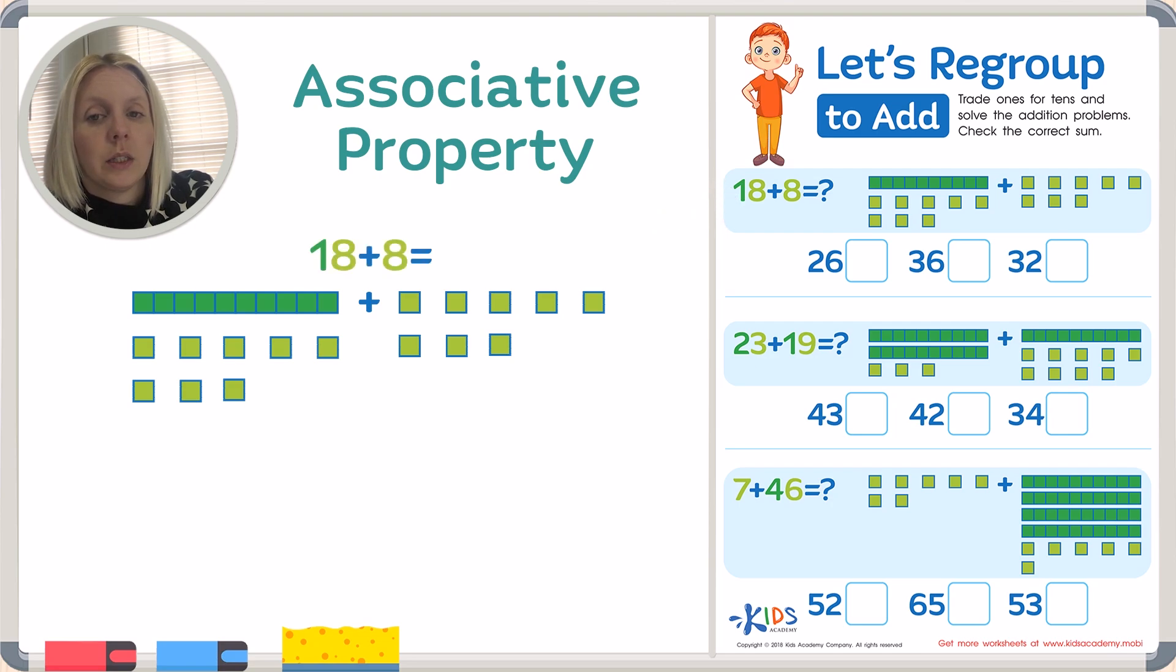So this is 18 plus 8 and we're trying to solve for the answer. We can count up every little thing or we can regroup. Regrouping tricks our eyes into seeing it in an easier way. We're going to find 10 of all of these ones, squish them together, and make a new 10.